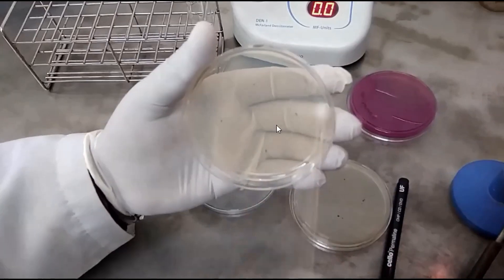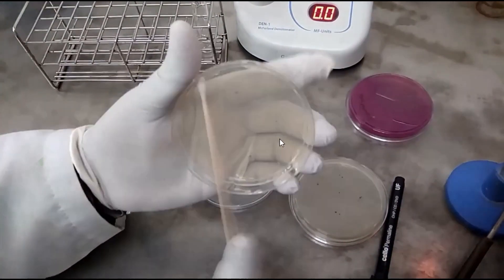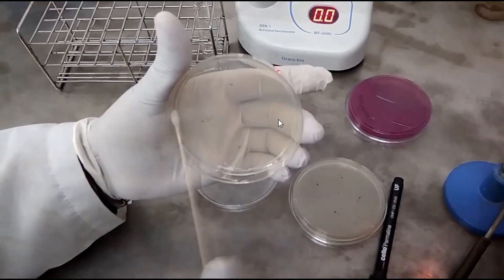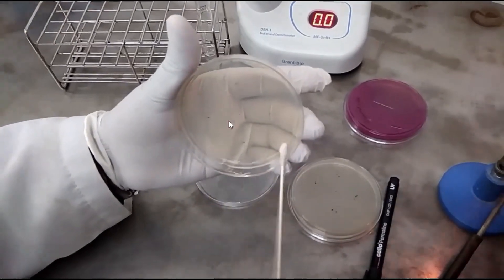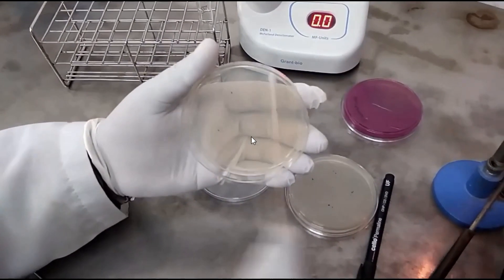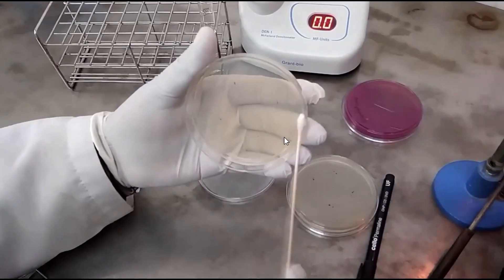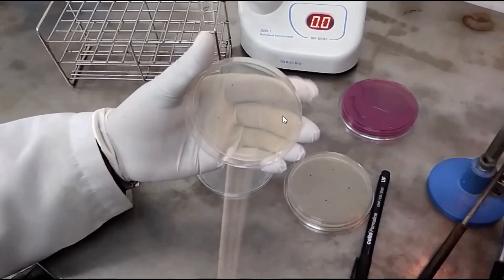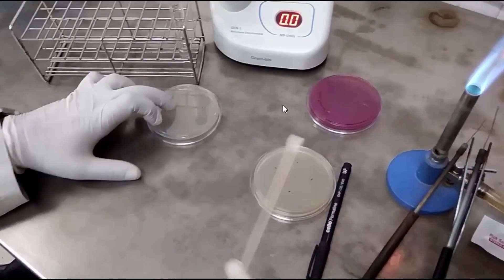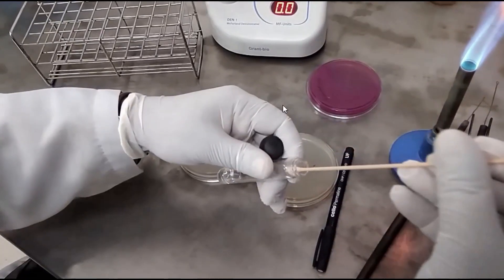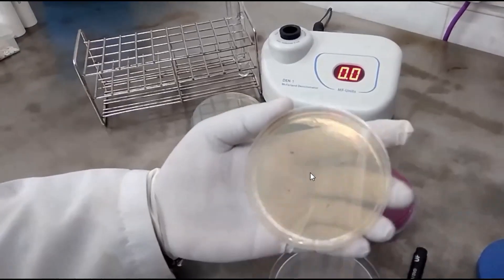Swab in this way. Rotate the plate at 60 degrees three times. In this way you will get uniform distribution of test organism. Similarly do another plate.